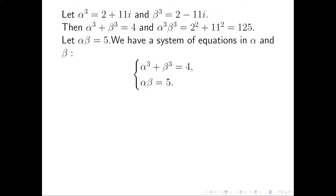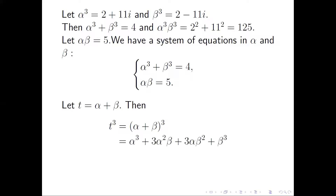We then have the system: α³ + β³ = 4 and α · β = 5. We introduce a parameter t = α + β, so t³ = (α + β)³ = α³ + 3α²β + 3αβ² + β³. Rearranging, and substituting α³ + β³ = 4, αβ = 5, and α + β = t, we get t³ = 4 + 3 · 5 · t, establishing a cubic equation in t.